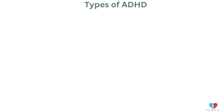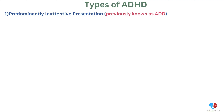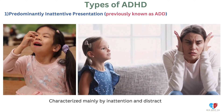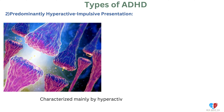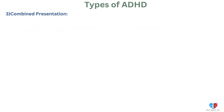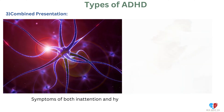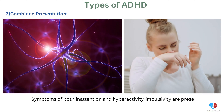Types of ADHD. 1. Predominantly inattentive presentation — previously known as ADD, characterized mainly by inattention and distractibility. 2. Predominantly hyperactive-impulsive presentation — characterized mainly by hyperactive and impulsive behaviors. 3. Combined presentation — symptoms of both inattention and hyperactivity-impulsivity are present.